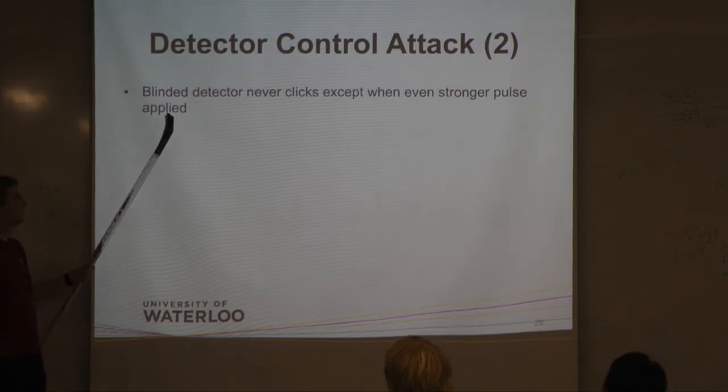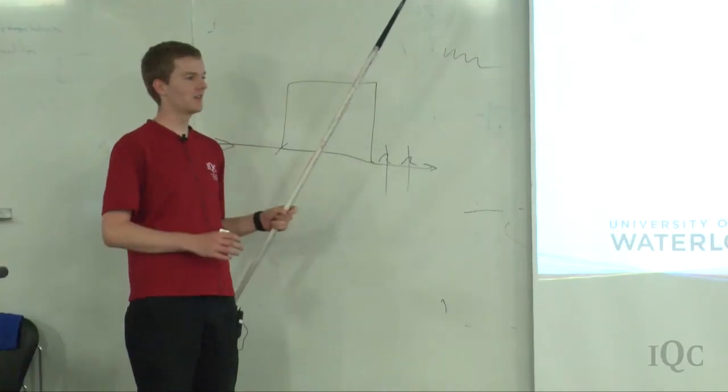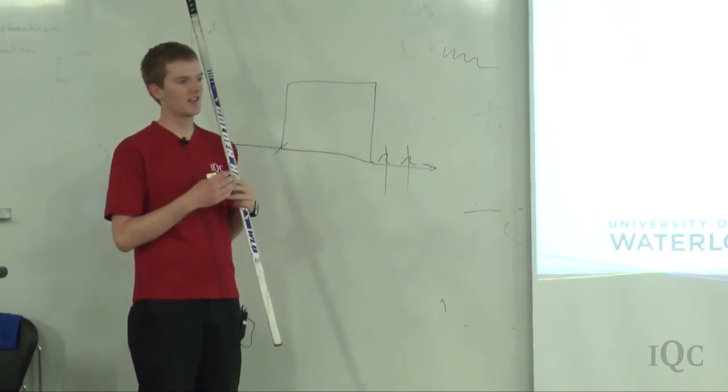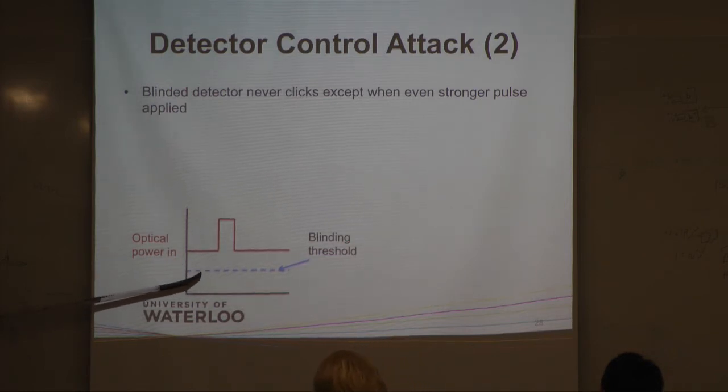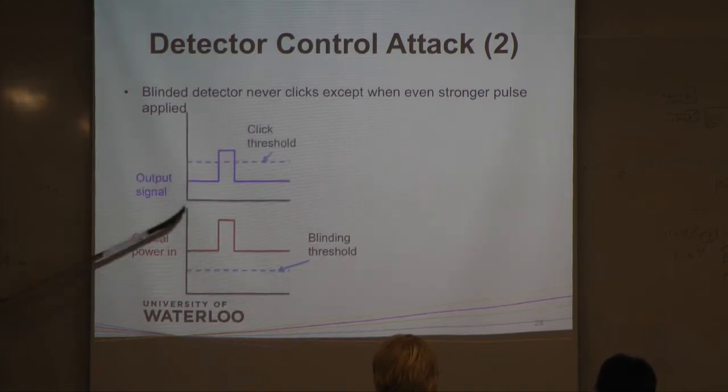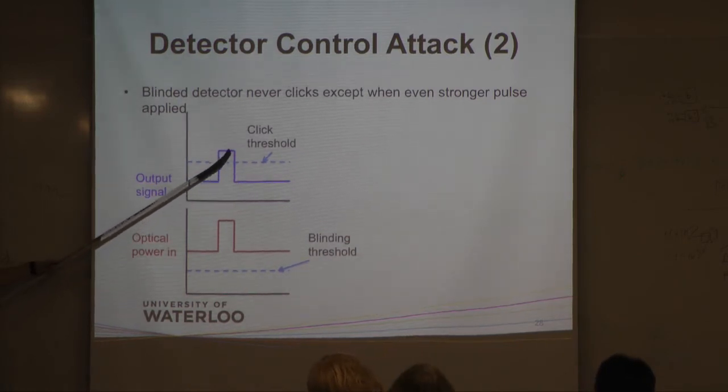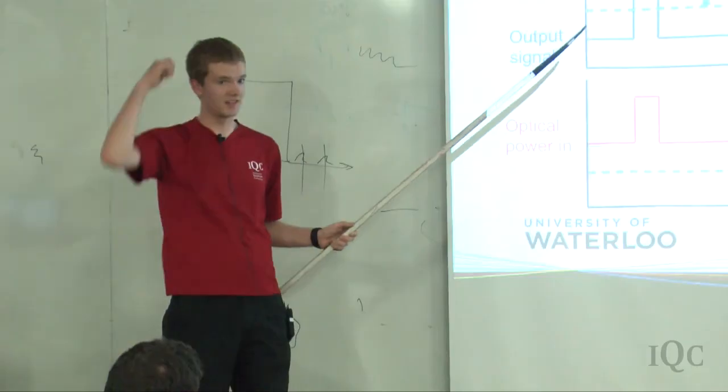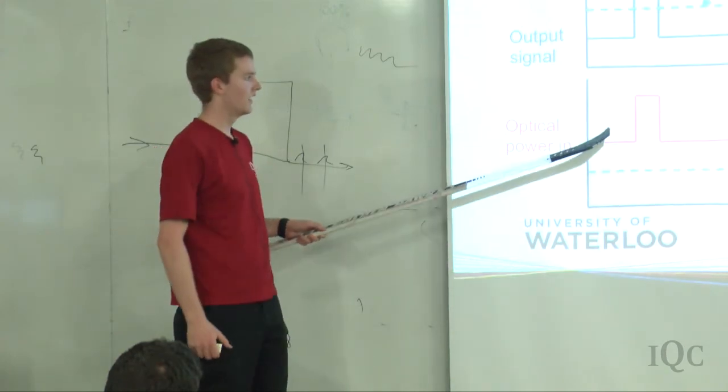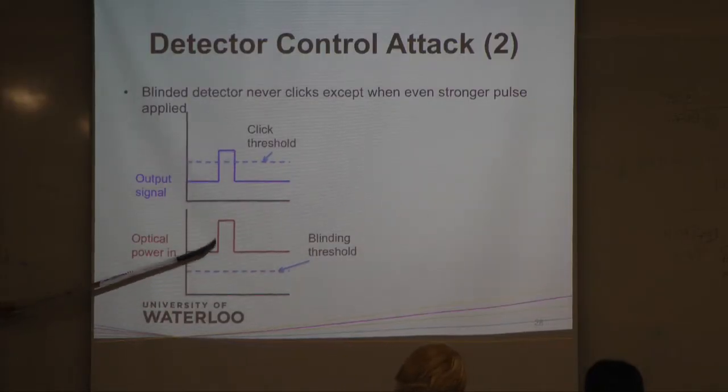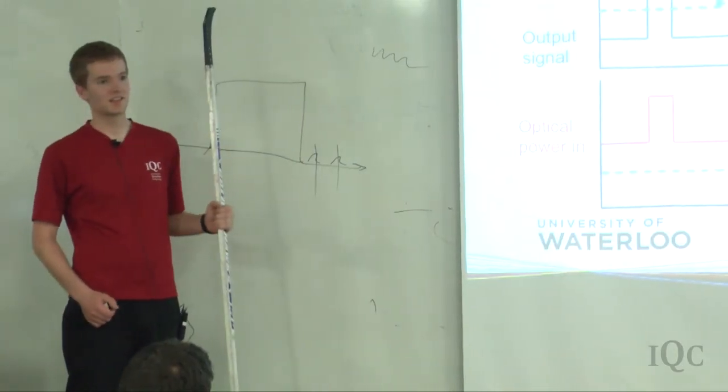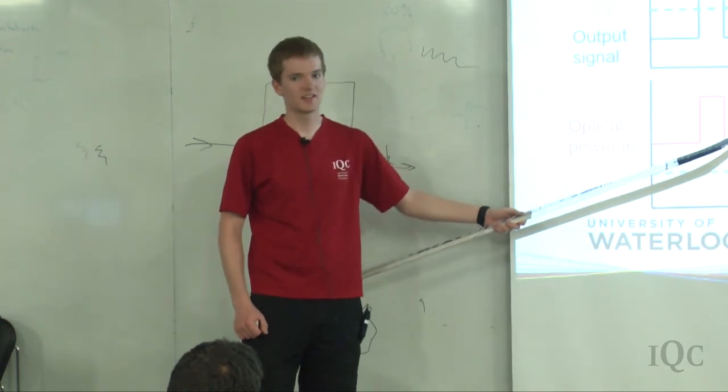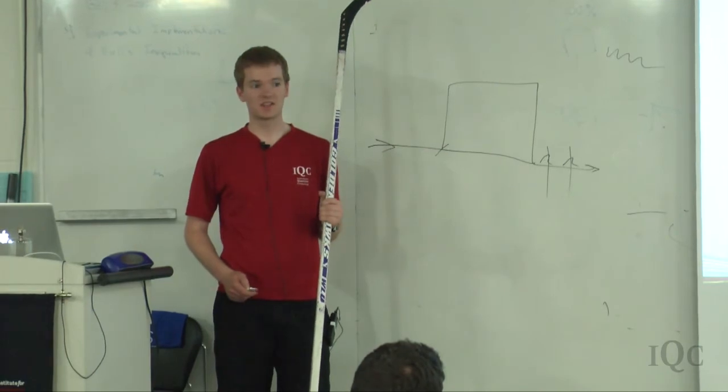So the blinded detector never clicks. Except you can apply an even stronger pulse and then make it click again. So it's called the linear mode. Instead of clicking for single photons, the detector outputs the voltage proportional to how much power is on. So we keep it above the blinding threshold. We're putting in enough optical power above the blinding threshold so it never clicks. But then we put in even more, we add another pulse on top. And so the output signal stays below some threshold. Then if we add the extra power, it goes above the click threshold of the detector. So the detector says, I think I've seen a photon, I'm going to put an output pulse. So the optical power is high enough to blind it. Then if we add even more, it pushes the output signal higher and creates a click. But this is totally artificial. So we think it's detecting single photons. But actually, it's detecting really bright light plus even more as a click. So you can start to see how Eve is able to control Bob's detectors.